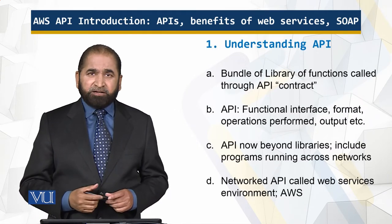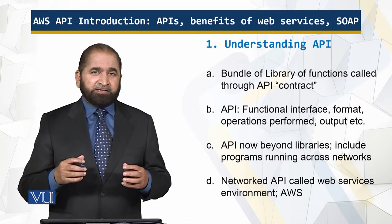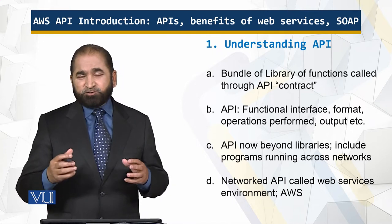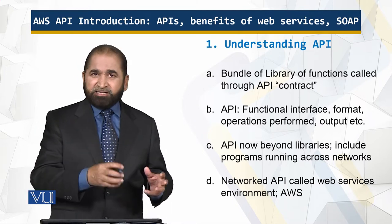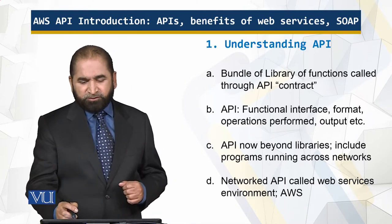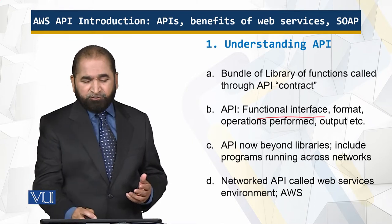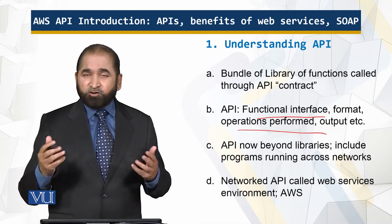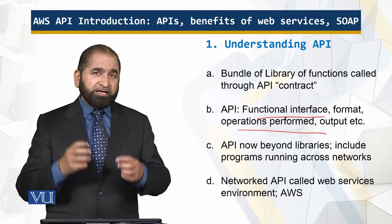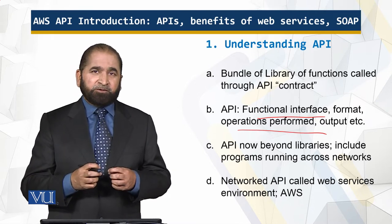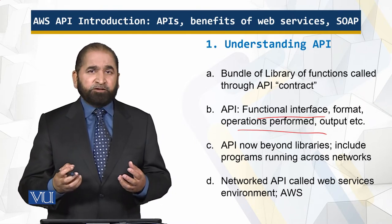Understanding API — what is API? An API is a bundle of library functions, and there is an interface or a contract through which the programmers or the software engineers can utilize those libraries of functions. They have a functional interface, they have a format of information, they have operations performed, they have input, and they have output also. They are pretty much self-contained and you can combine those APIs together, which is a collection of libraries, and you can generate additional functionality with those APIs.